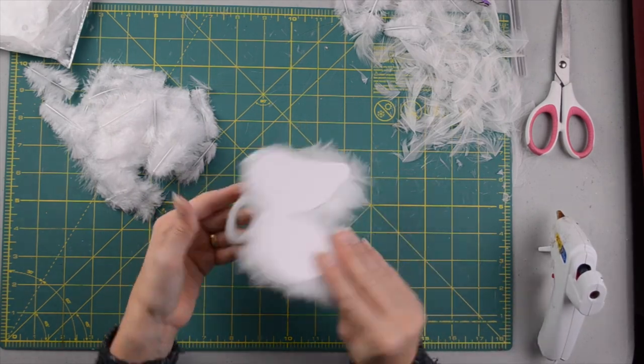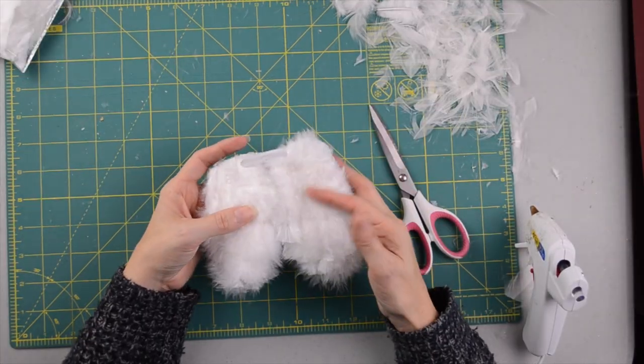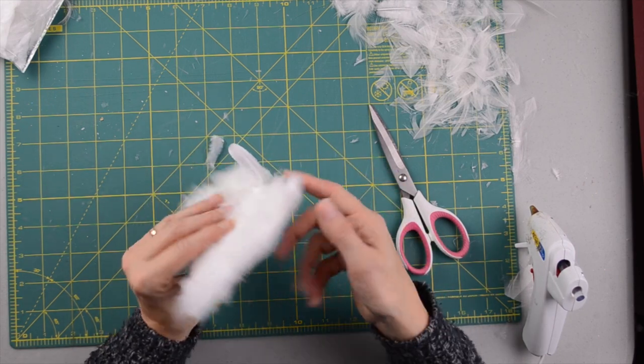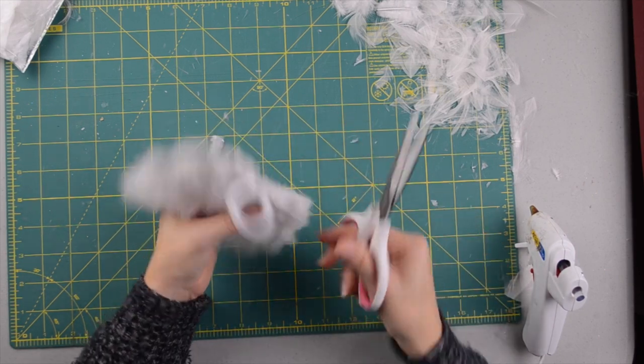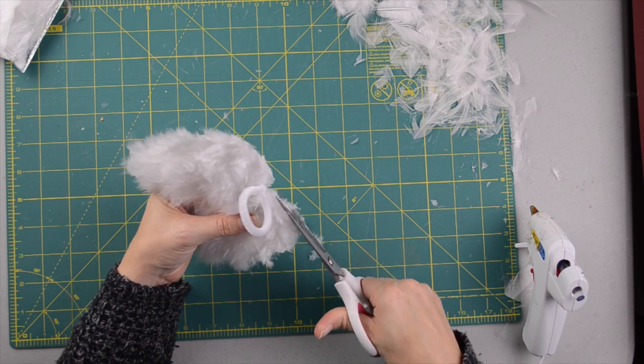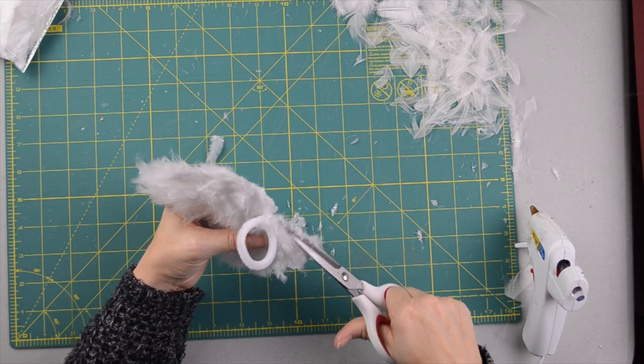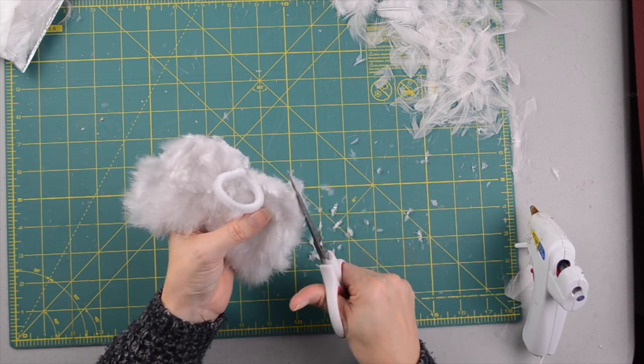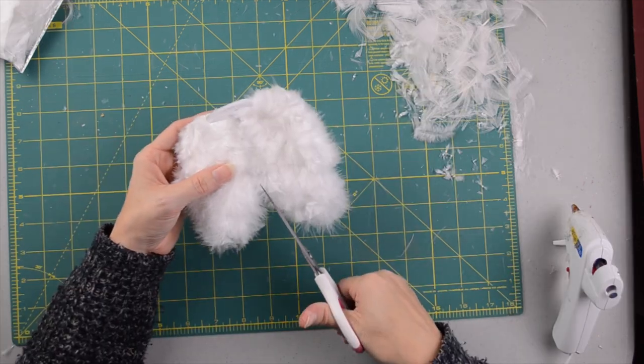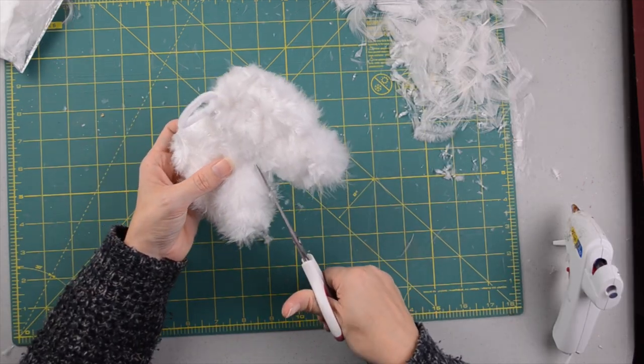So now I'm going to do the back side. So now that I have all my feathers on, I'm going to trim up around the top where I let it overlap. Also, I'm just going to trim up some of the feathers here in the middle.